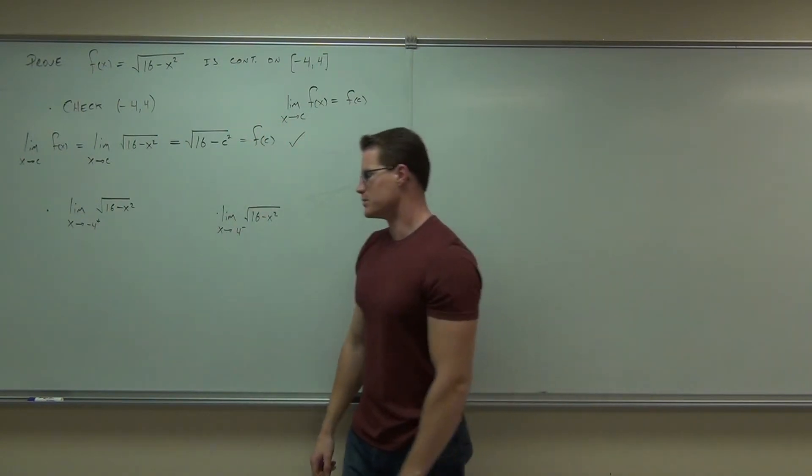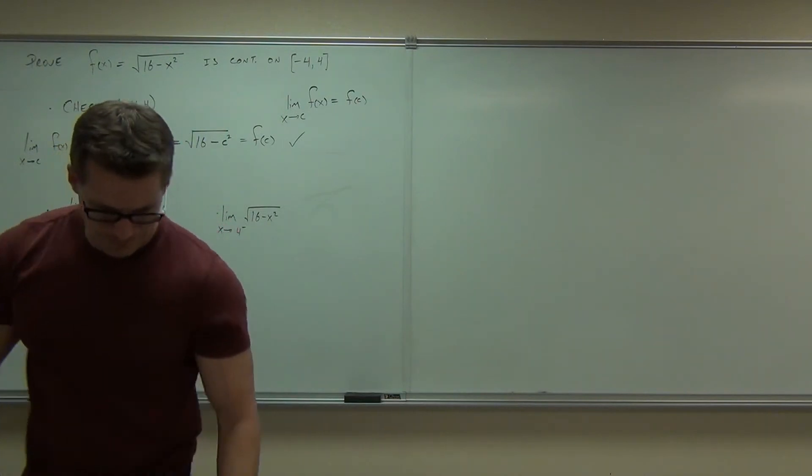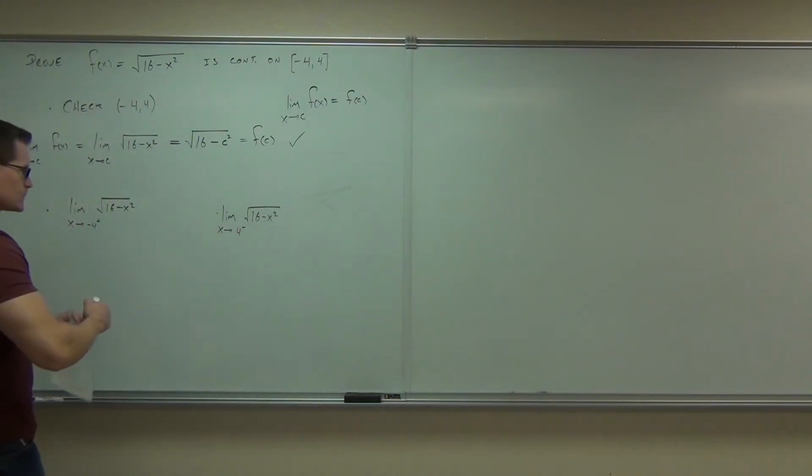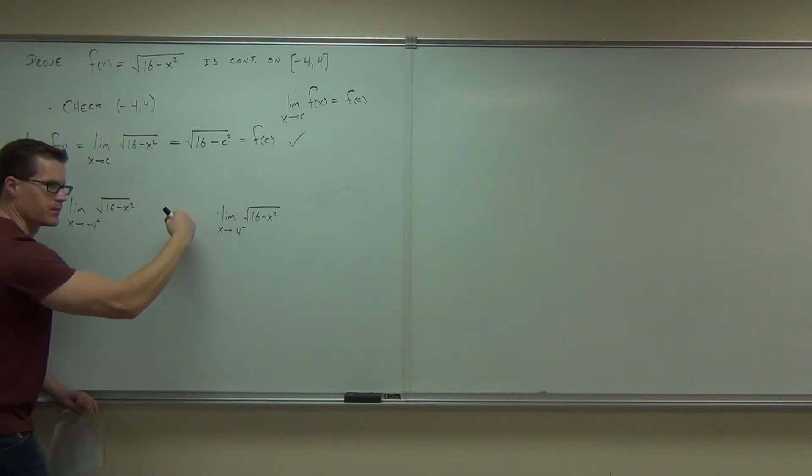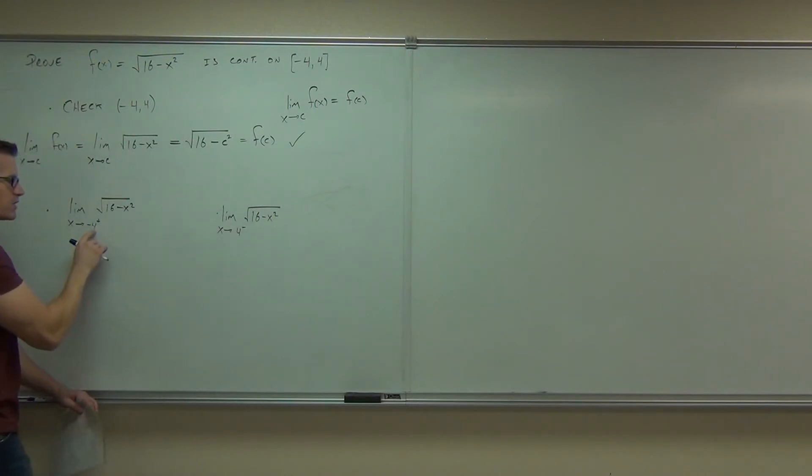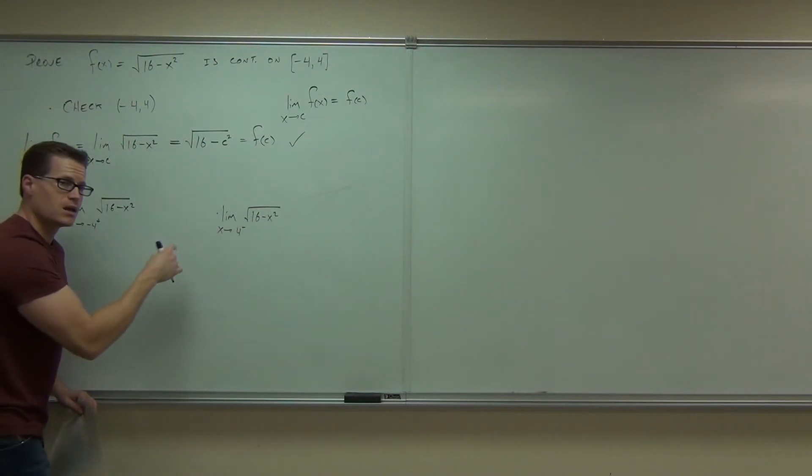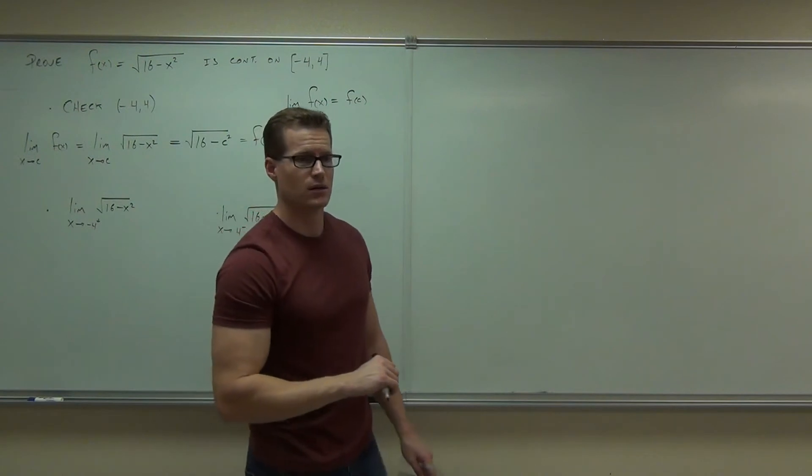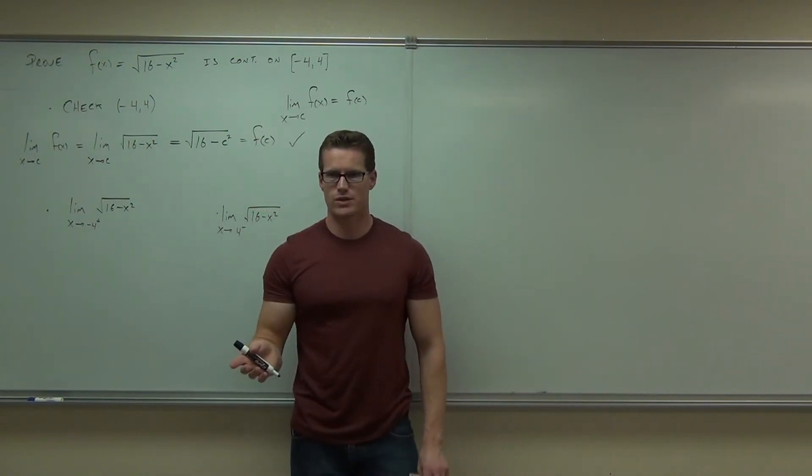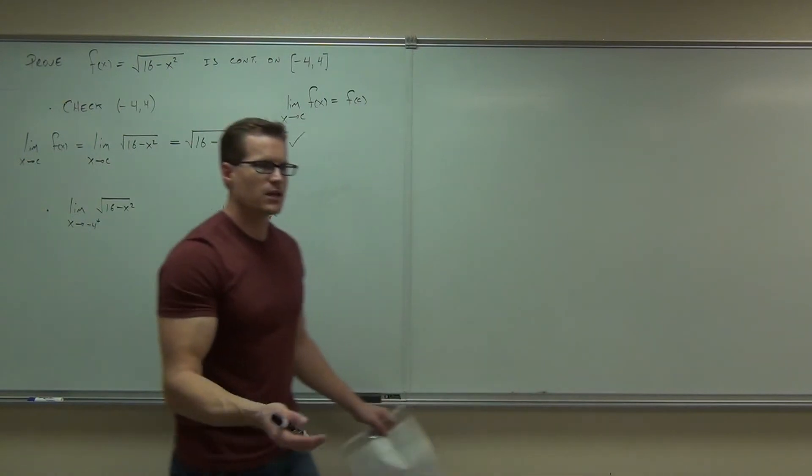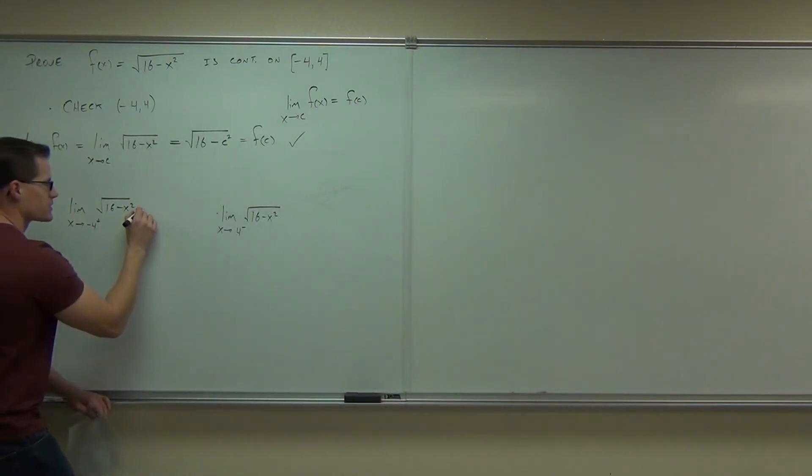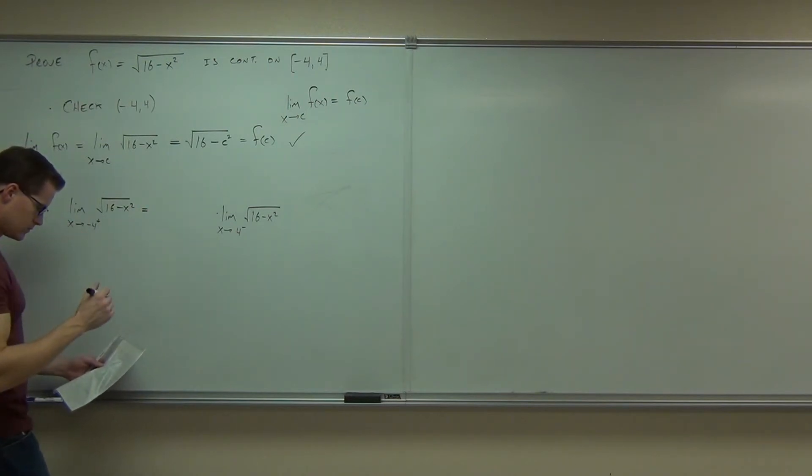Now, as far as the one-sided limits go, if we're going from the right to negative 4, we're getting really, really close to negative 4. Wouldn't it be okay if I just plugged in negative 4? What's 16 minus negative 4 squared? Is that okay? Can you get a zero inside of the square root? Is that acceptable? Yeah. Then, yeah, that's a one-sided limit. That's going to exist as well. So this is going to equal zero.